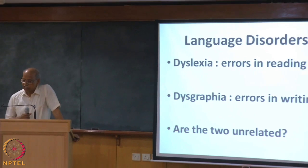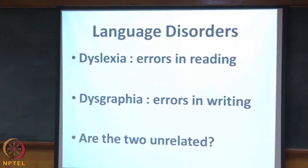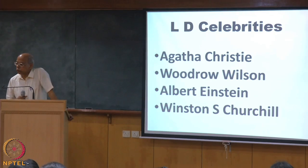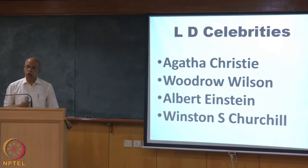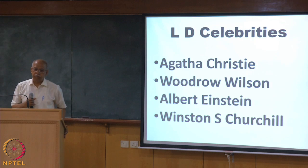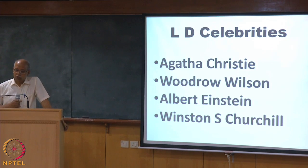Let's talk about dyslexia. Reading errors are known as dyslexia, writing errors as dysgraphia, but it has many sub-varieties. Are the two unrelated? They don't seem to be unrelated, but we do not know enough. Lots of people known to have been dyslexic in early childhood are celebrated today. If you Google 'celebrities with dyslexia,' the first page gives you more than 250 names from nearly all fields — philosophy to politics, intellectual to mundane. Some notable names include Agatha Christie, Woodrow Wilson, Albert Einstein, and Winston Churchill.